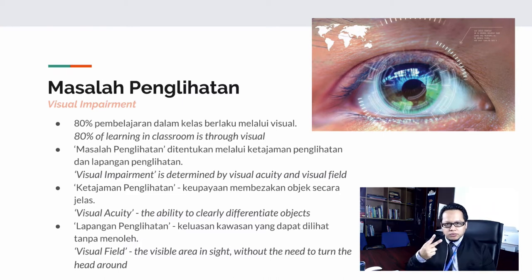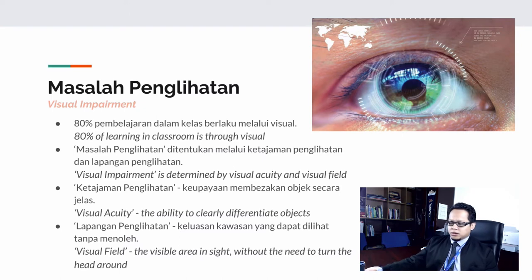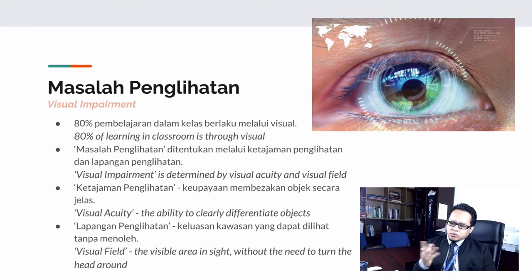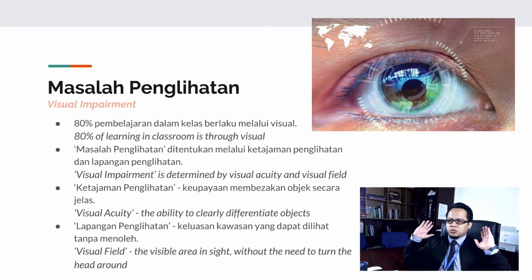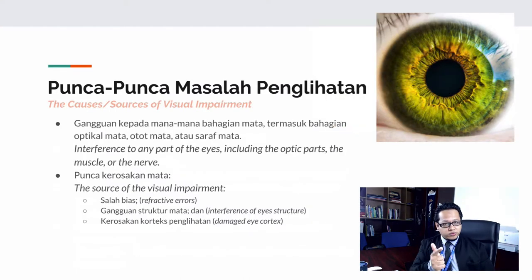Visual impairment is determined by two things: visual acuity and visual field. Visual acuity refers to the ability to differentiate objects whether near or afar — to see and differentiate between objects clearly. Visual field, on the other hand, is the visible area of sight — you can measure where your sight ends when looking at something.